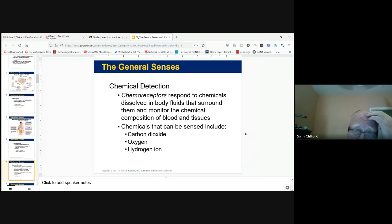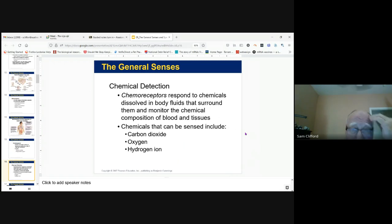So that's proprioceptors. We have chemoreceptors that sense pH, oxygen, and carbon dioxide. Carbon dioxide, absolutely amazing how we're constantly monitoring carbon dioxide levels and oxygen levels. Nowadays you can take an oximeter.